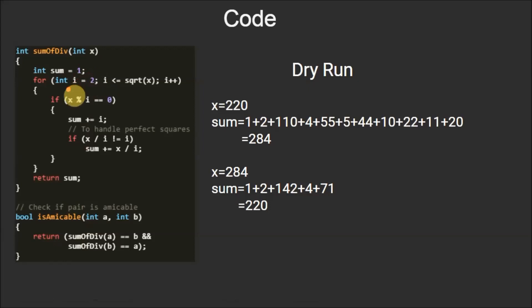Then we are running a loop from 2 to square root of x. Within this loop we are checking that if i is a divisor of x, we are adding the value of i to sum. We are also checking that if x divided by i is not equal to i, then we are adding this value, that is x divided by i, to the sum value. This condition is to handle perfect squares.